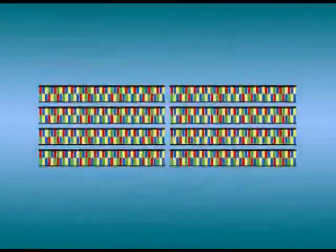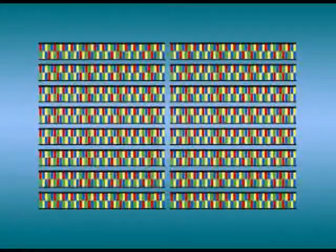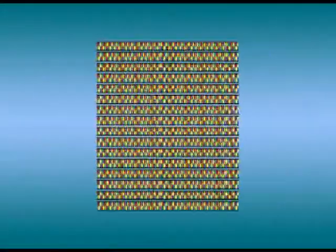The number of DNA strands continues to increase exponentially with each cycle, so that after 20 cycles there are over a million copies of DNA.